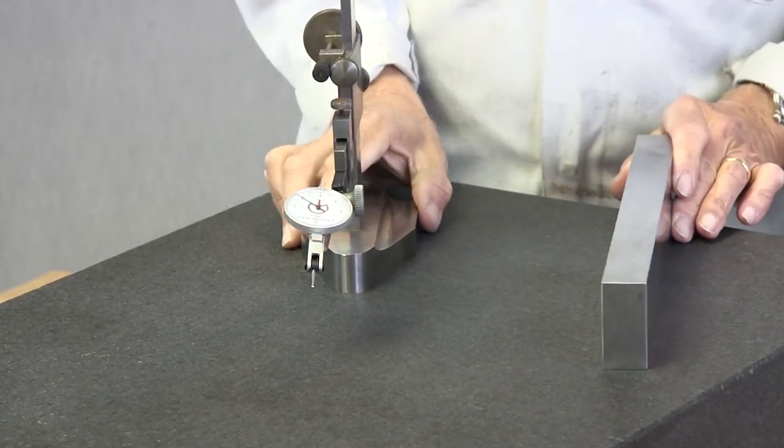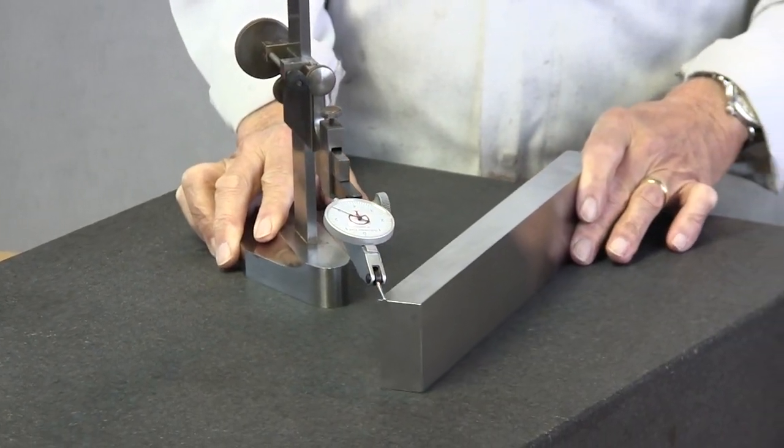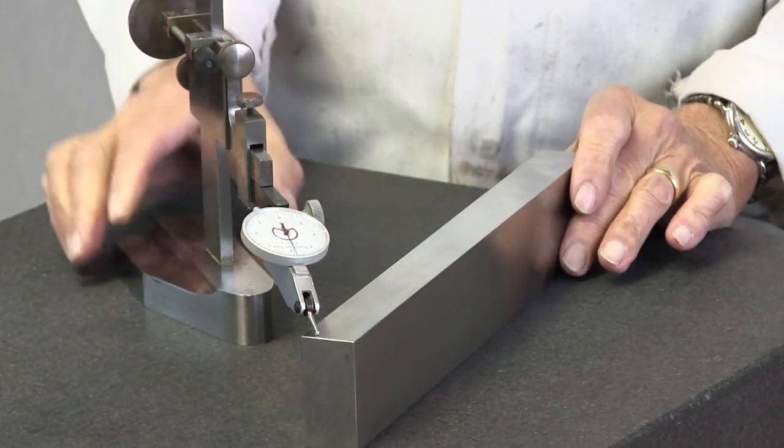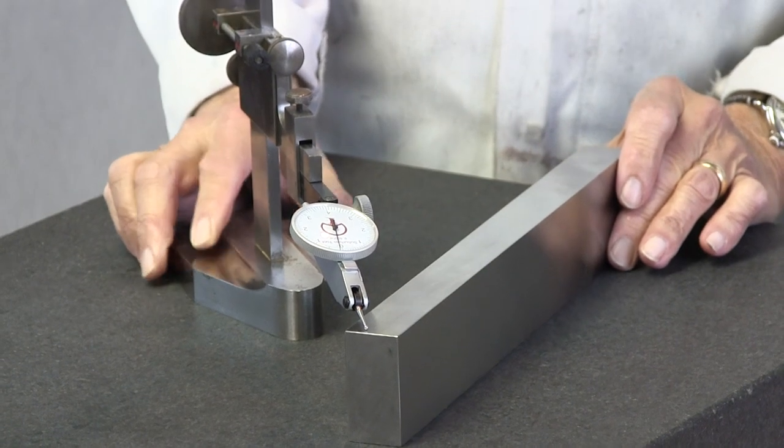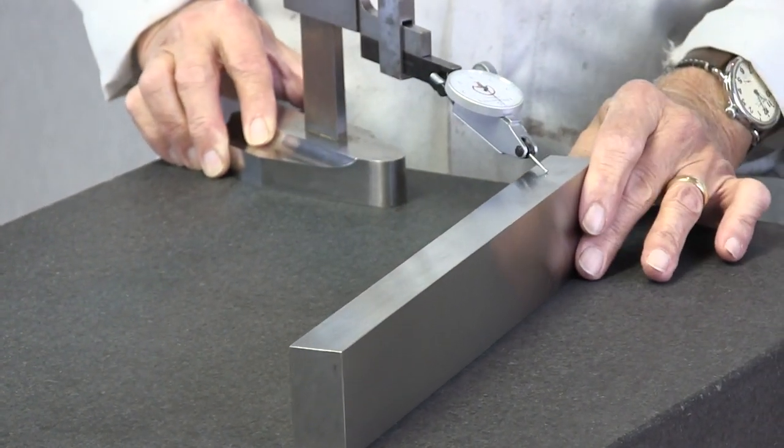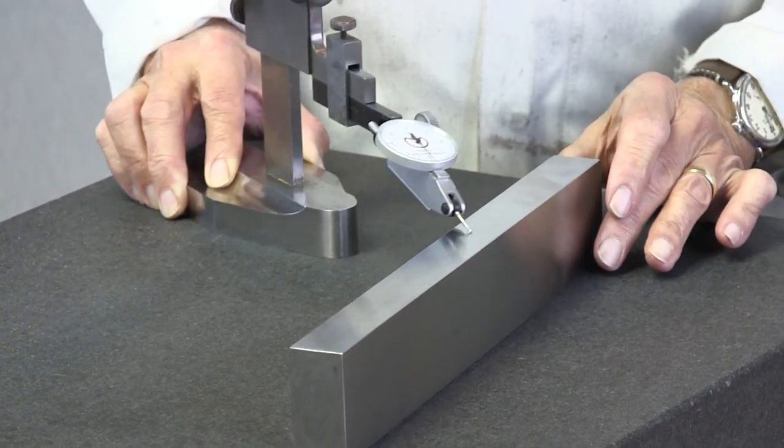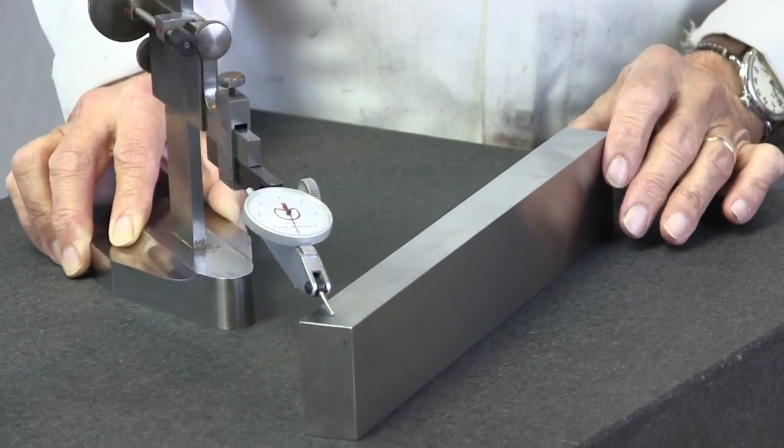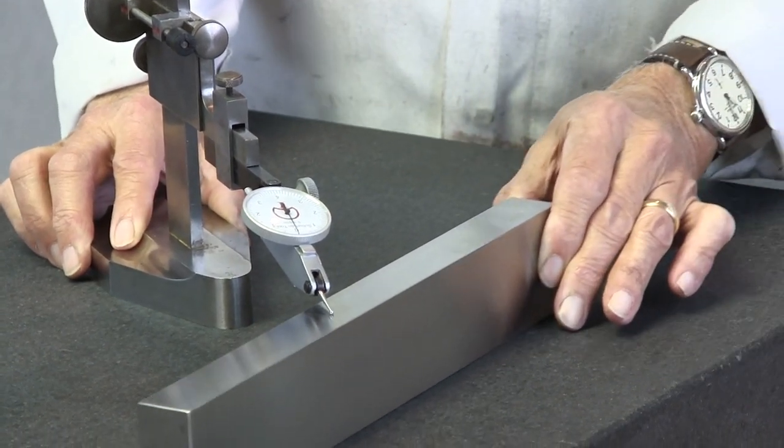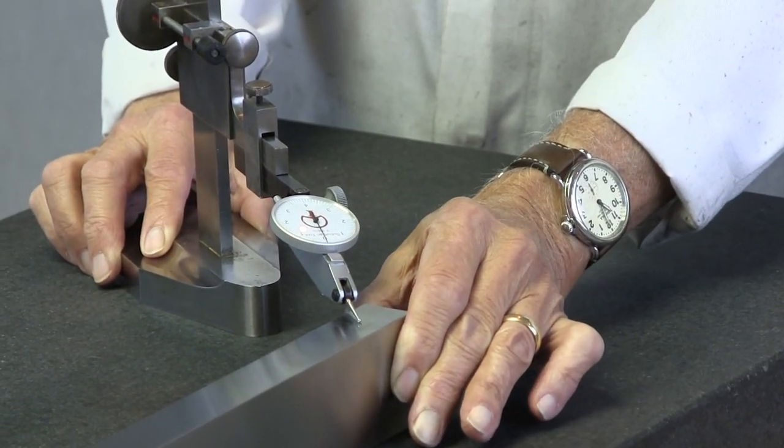We're going to check it across with a tenth indicator. Remember, we always want to put it on the edge and slide. We're dealing with tenths here, almost millionths, so we have to be very careful that we understand. Now you see this one, this is within a tenth or so, which is perfect.